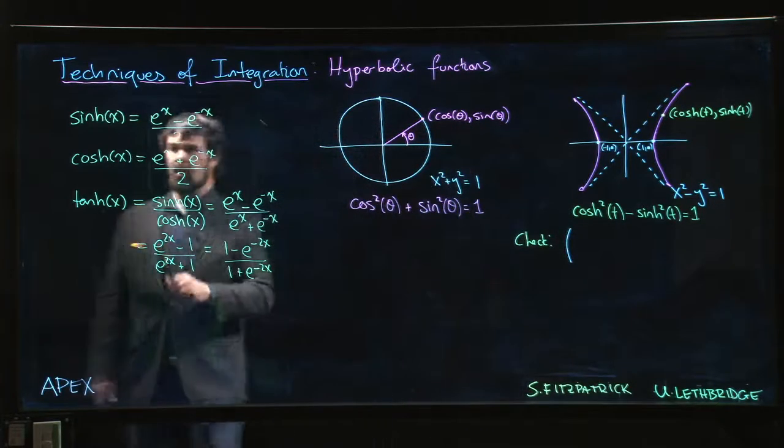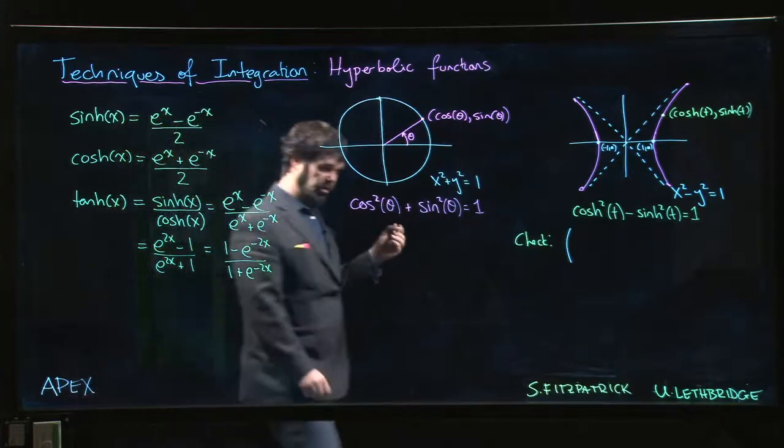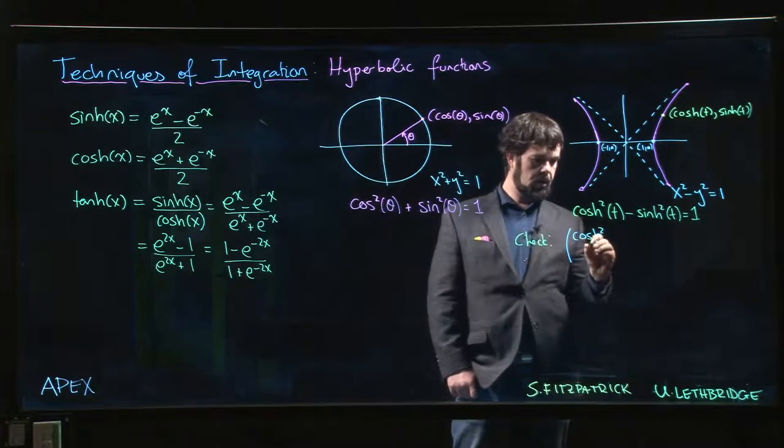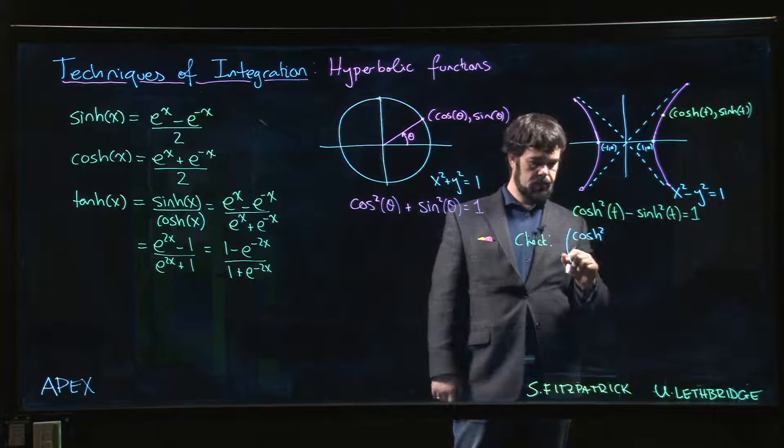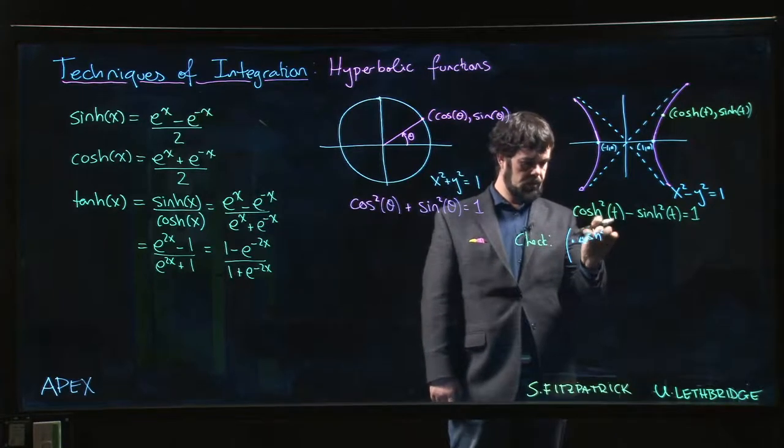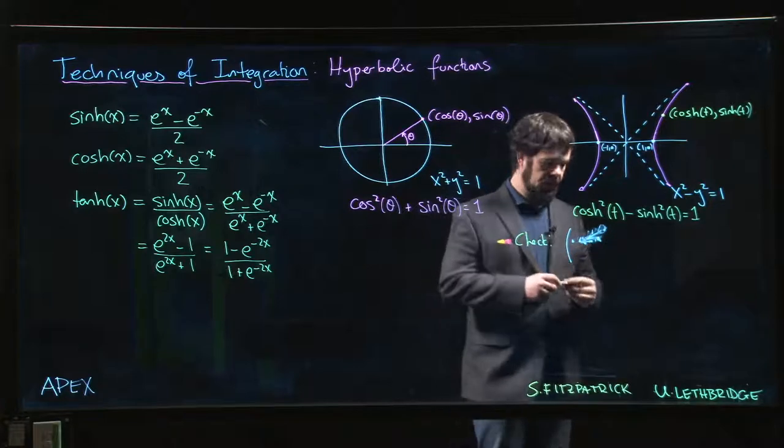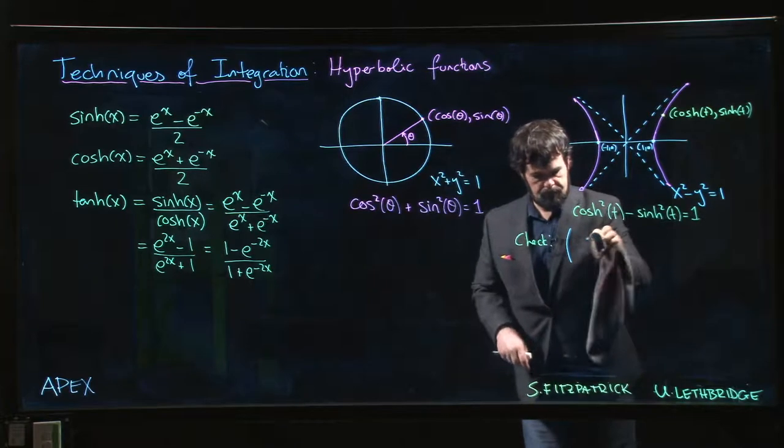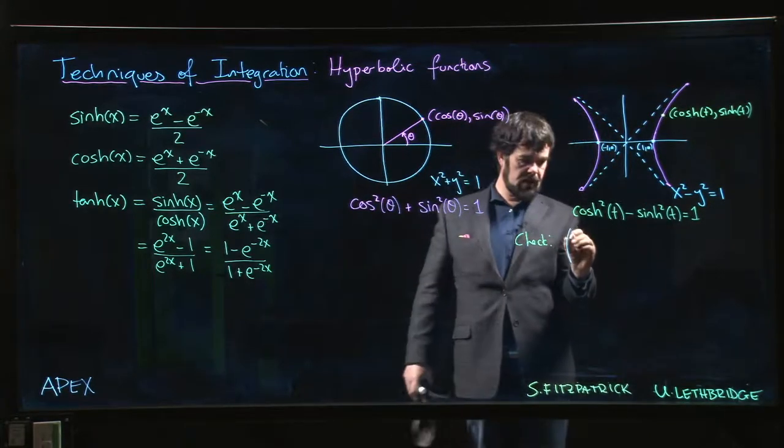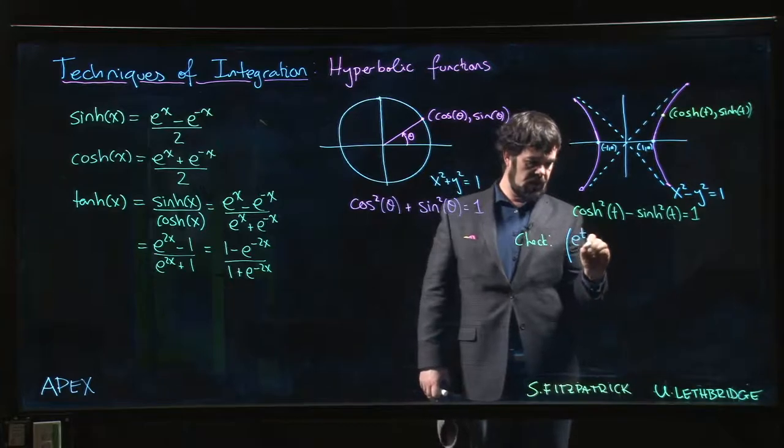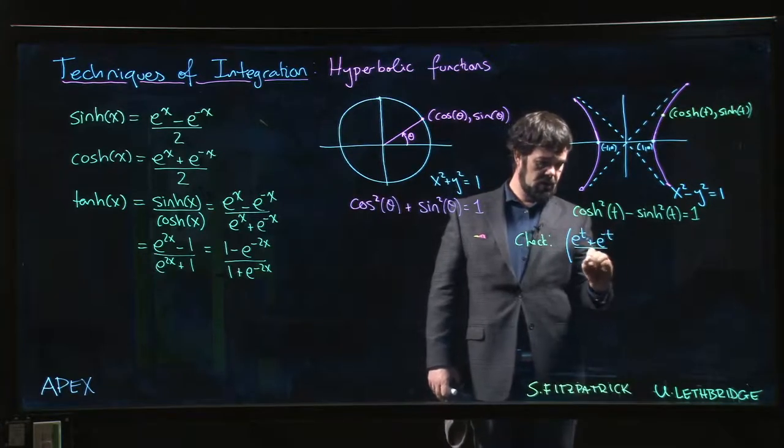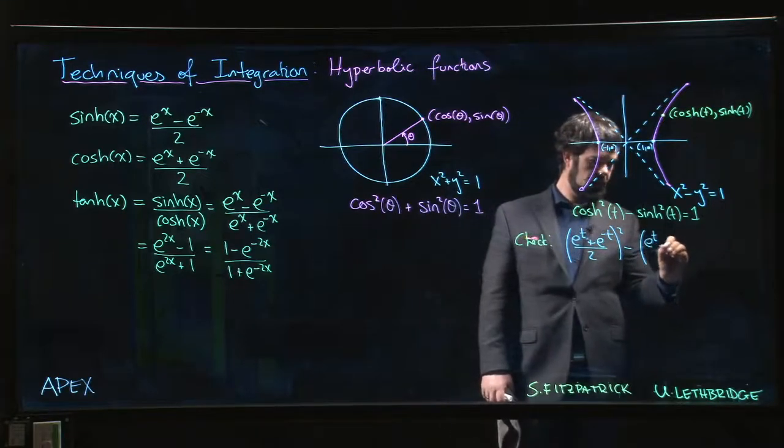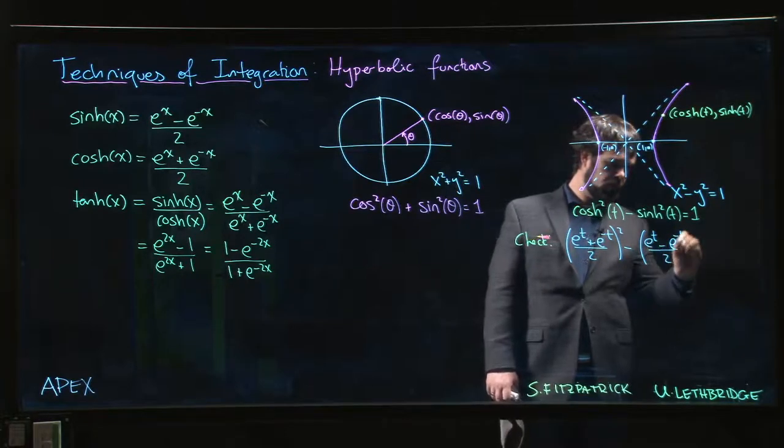So we can put in the definitions. You'll see that these are defined in terms of exponential functions. So we put in hyperbolic cos squared t, and let's jump right in. So e to the t plus e to the minus t over 2, squared, minus e to the t minus e to the minus t over 2, squared.